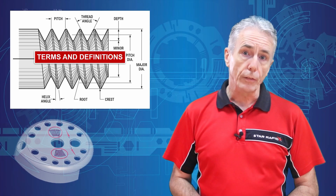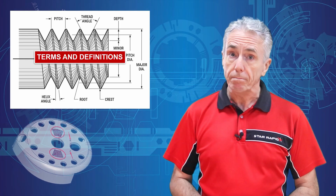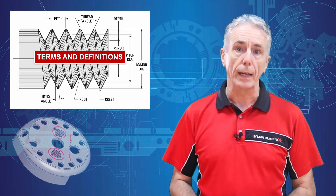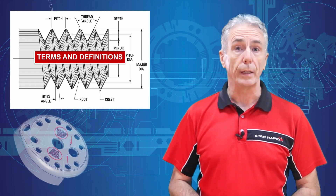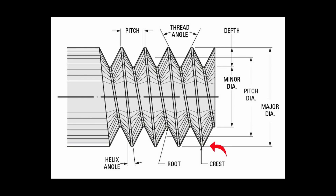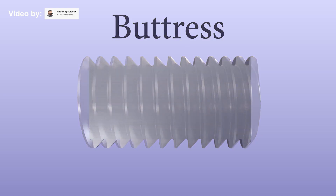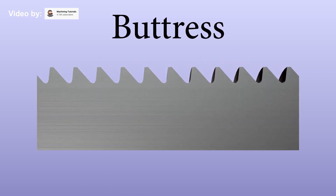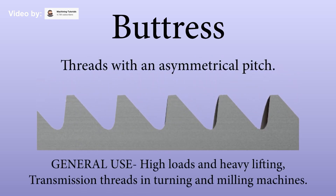Regardless of the type of thread — and there are many — they're all defined by the following features. Crest: the high point of the groove, like the mountain top. Root: the low point of the groove, like the valley bottom. Thread angle: the angle between opposing flanks. It's possible to have two different angles, and these are called buttress threads.